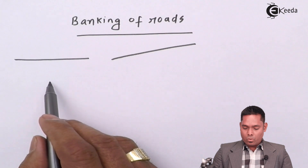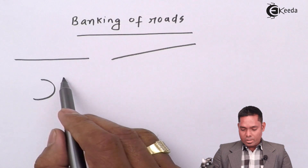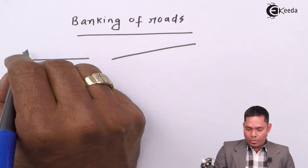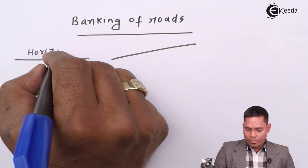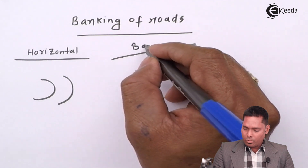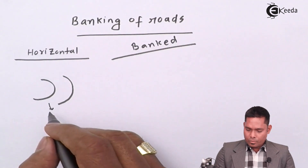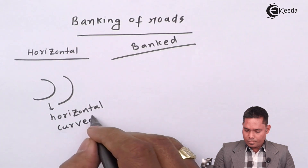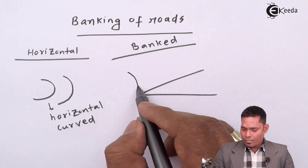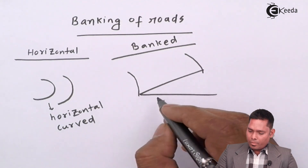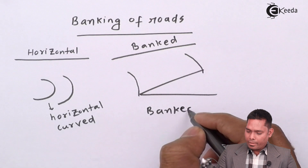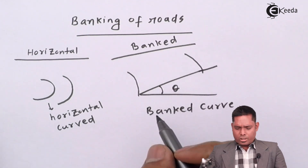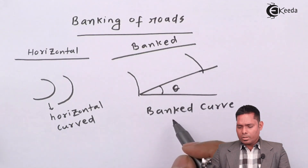In terms of horizontal and curved roads, we also have a horizontal curved road, a banked road, and a banked curved road. The banked curved road is raised with respect to an angle theta — this is the angle of banking.